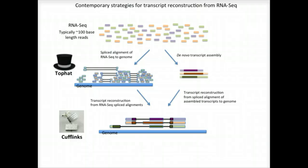There are tools that exist that implement these strategies. The Tuxedo software suite is popular for applying the process on the left, where the TopHat utility is used to generate spliced alignments of the short reads, and then the Cufflinks tool performs the alignment assembly operation to generate the transcript structures.